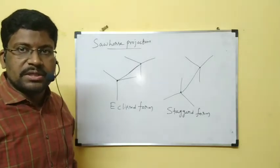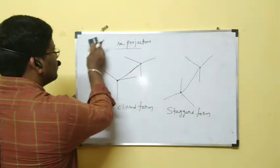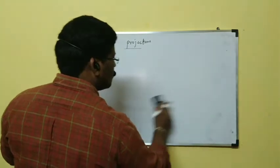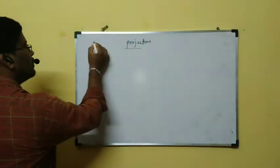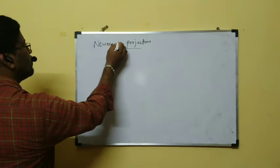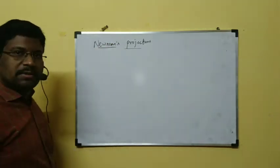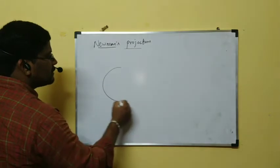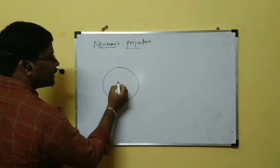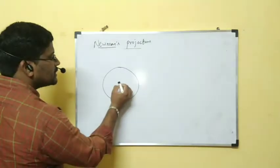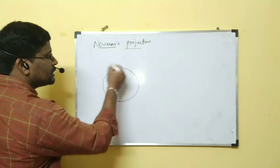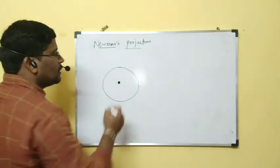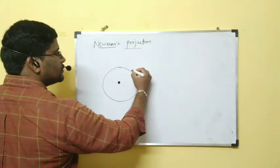After this, we are going through Newman's projections. In Newman's projections, the front carbon is imagined as a circle, and the rear carbon is imagined as a dot. This is front carbon represented as a circle; this is rear carbon represented as a dot. I am going to show the eclipsed form.